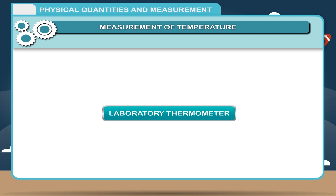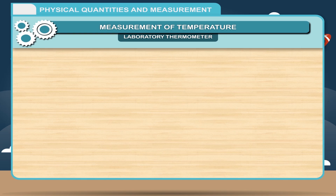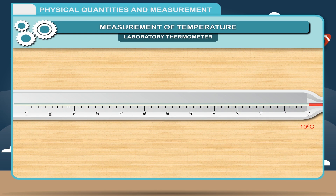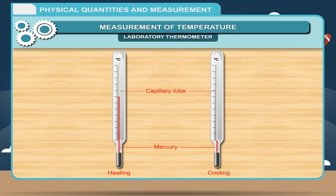A laboratory thermometer is used to measure temperature in laboratories during various experiments. Generally, it is graduated from minus 10 degrees Celsius to 110 degrees Celsius. When the bulb is heated or cooled, mercury in the bulb expands or contracts and rises up or goes down through the capillary tube. The mercury can be seen through the stem as a thin shining thread. Mercury is preferred because it is a liquid metal, a good conductor of heat, and expands uniformly.